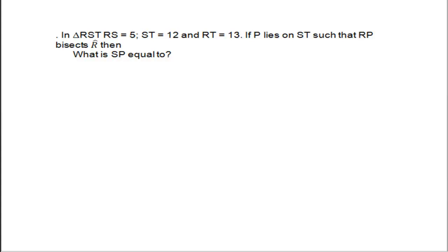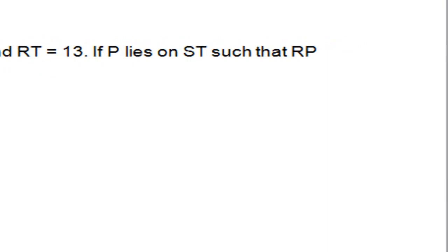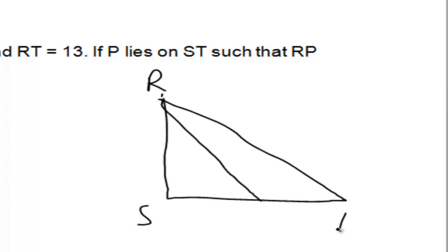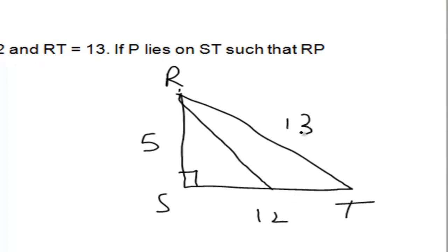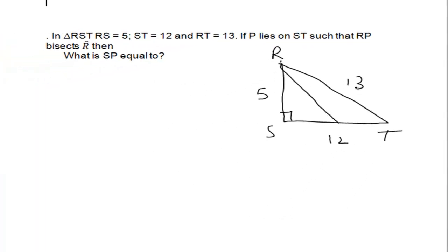The next problem we're tackling is problem number 20 on page 105. It says triangle RST with angle RST equal to 90 degrees. You've got 5 for RS, 12, and 13. I've drawn the triangle as a right angle triangle because of 5, 12, 13. The question is to find RP which is bisected by 6, and we want to find the value of SP.